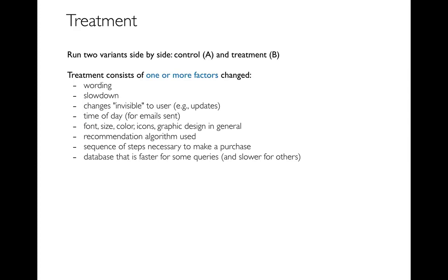Other treatment factors: if you're sending emails, what time of day do you send it — dinner time, or the middle of the night so people see it first thing in the morning? All kinds of graphic design details — maybe you're designing full graphics or logos. Maybe you're on Amazon with a recommendation system showing people different products; you could develop different machine learning algorithms to make those suggestions and try alternatives. If people are buying things, there's a sequence of steps and you can try different sequences. Maybe you're switching databases on the back end — from MySQL to PostgreSQL — and a database might be faster for some queries and slower for others.